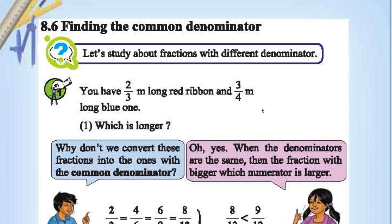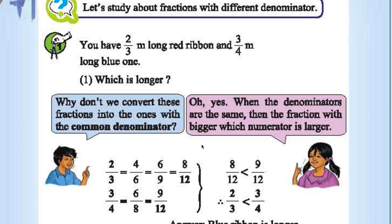Now, how to find the common denominator. We have a 2 by 3 meter long red ribbon and a 3 by 4 meter long blue one. Which is longer? We need to make the denominators equal. For that, multiply numerator and denominator by 4 here, and by 3 here. It becomes 8 by 12 and 6 by 12. 8 by 12 is longer, so 2 by 3 is greater than 3 by 4.